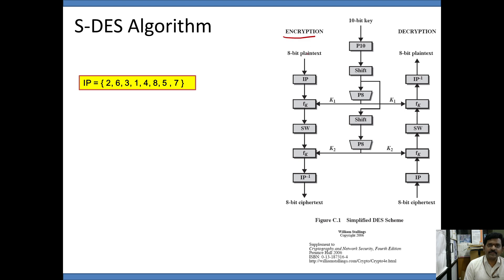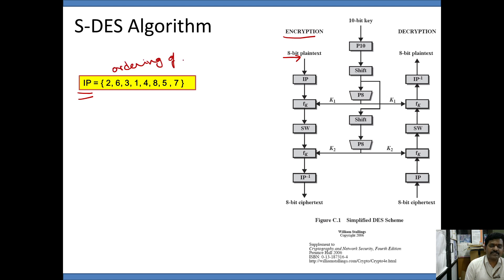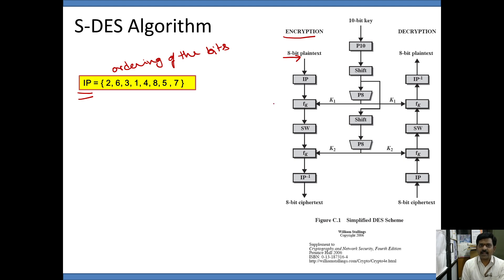We take encryption with the help of 8-bit plain text, and then it undergoes initial permutation with the help of the IP table. The IP table indicates the ordering of the bits, or permutation positions of the bits. The 8-bit input is permuted with the help of the IP table and subsequently the permuted text undergoes two rounds of round functions.